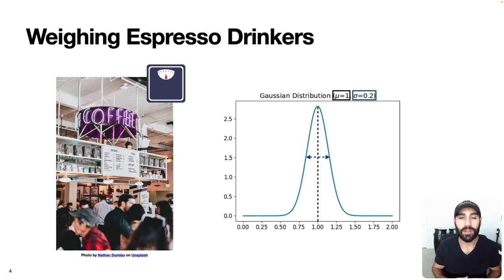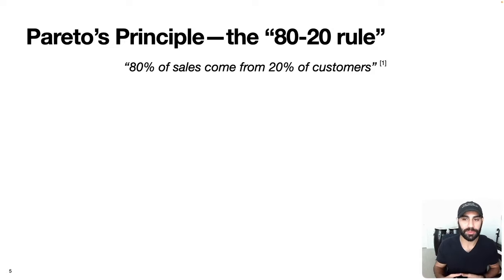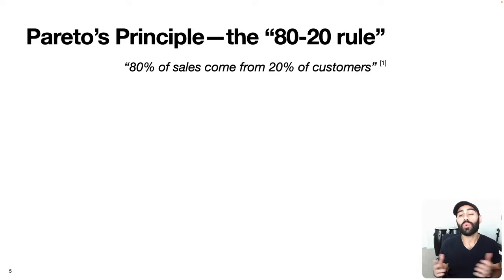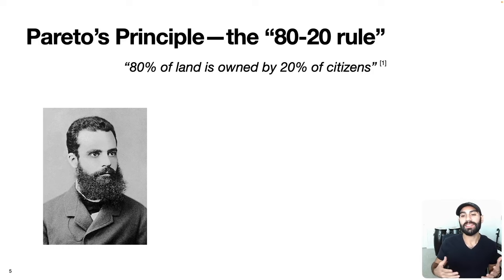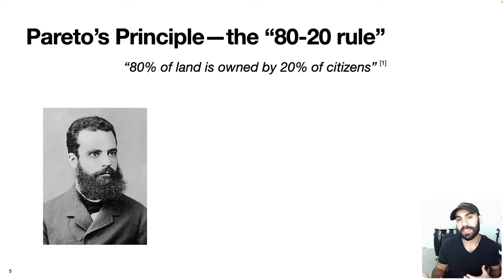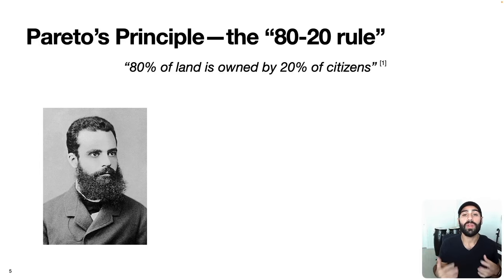However, not all data that we care about follows a Gaussian distribution. A great example comes from the work of Vilfredo Pareto. Many people have heard of Pareto's principle or the 80-20 rule — typically quoted as 80% of sales come from 20% of customers. However, this idea did not originate from business. It actually came from the work of Italian economist and mathematician Vilfredo Pareto in his study of Italian land ownership, where he found that about 80% of the land in Italy was owned by about 20% of the citizens.